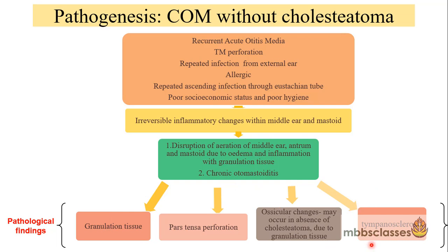The fourth pathological finding is tympanosclerosis. These are chalky-like deposits which may be seen over the tympanic membrane or around the ossicular chain. In the post-inflammation stage, there occurs hyalinization and calcification of the sub-epithelial connective tissue. These chalky white deposits may be seen over the remnant tympanic membrane, over the promontory, around the ossicles, tendons and around the oval and round window. When present around the ossicular chain, it can lead to a greater degree of hearing loss.